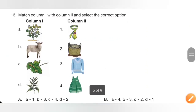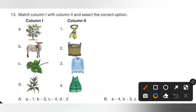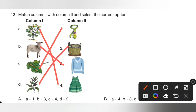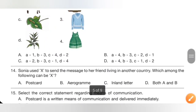Question 13: Match column 1 with column 2. A. Cotton plant — makes cotton frock, so A4. B. Sheep — gives wool used to make sweaters, so B3. C. Silkworm — helps make silk tie, so C1. D. Jute fibre — used to make a basket, so D2. The matching is A4, B3, C1, D2. Option D is the correct answer.